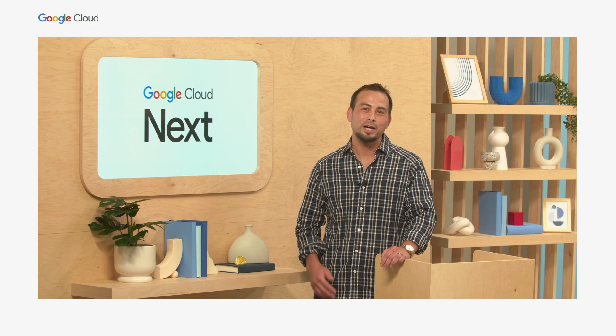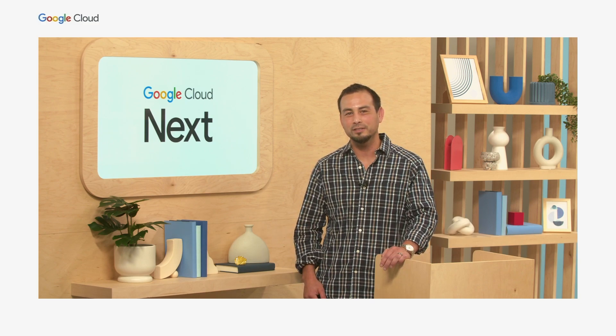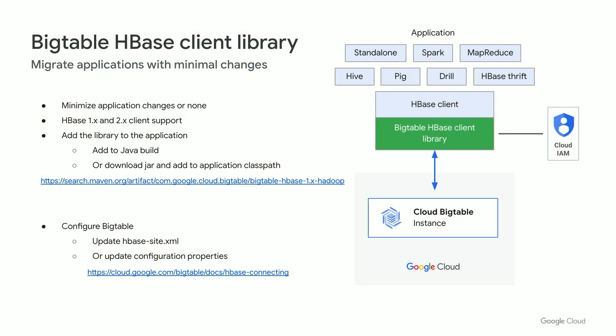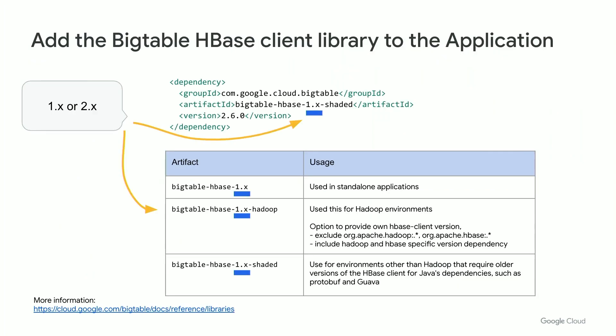Let's review some available migration capabilities to accelerate your migration. First, let's quickly review the Bigtable HBase client library — the one that Box used in production to send reads and writes that were previously sent to HBase to Bigtable. The library supports HBase 1.x and 2.x clients and may be added to your application in the Java build or as an auxiliary jar. The library can then be configured to send requests to Bigtable in the HBase site.xml or in the application configuration properties.